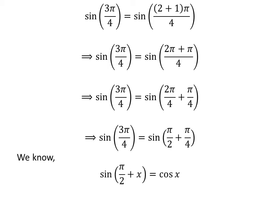We know the famous trigonometry identity: sine of pi upon 2 plus x is equal to cosine of x. The proof of the identity has been explained in the video appearing in the upper right corner of this video. The link of the video is also given in the description section.